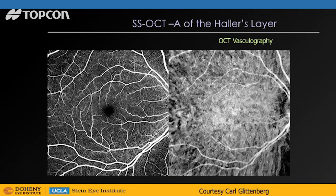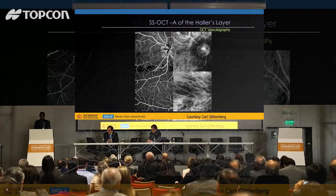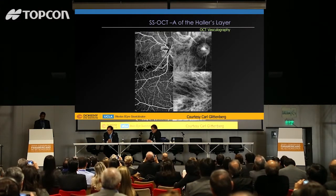Carl Glittenberg at Topcon has done some very nice processing. Not OCT angiography per se, but because you get good signal in the choroid, you can use the structural OCT alone and invert the signal — make dark bright — and actually reconstruct maps of the choroid. This is not flow information; this is structural information. That's why they've selected a different term — vasculography — to describe that finding, but it does give you a nice depiction of the larger choroidal vessels.